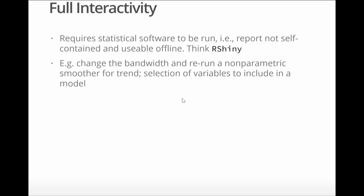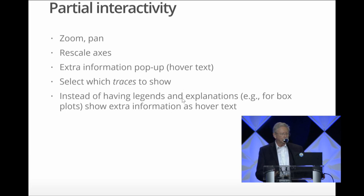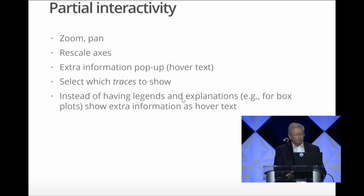Just a brief mention of interactive graphics and what sort of levels of interactivity. There's full interactivity using tools such as RShiny, where you can change your mind about what variables you're analyzing and how you're analyzing them. But what I'm going to be talking about today is partial interactivity. You can zoom and pan, rescale axes, provide extra information using popups such as hover text. And then very importantly, you can select which traces of data to show. Instead of having legends and explanations, show extra information as hover text.